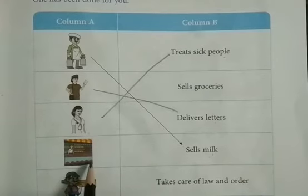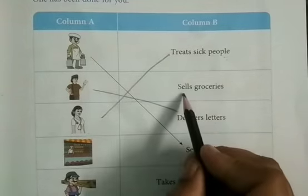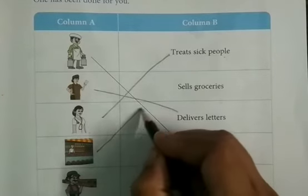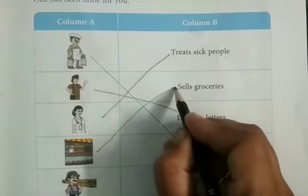Now check. Here is a grocer, picture of grocer is given. Now what will the grocer do? Yes. He will sell groceries. So grocer sells groceries. And this is the correct one.